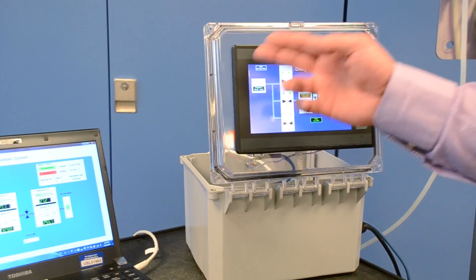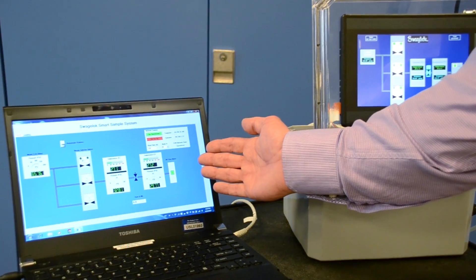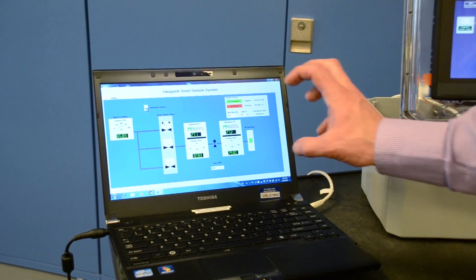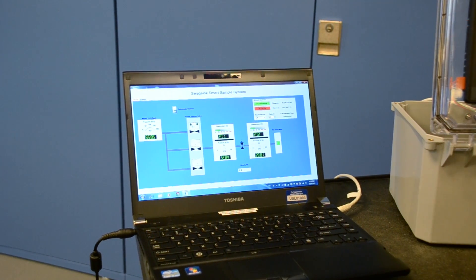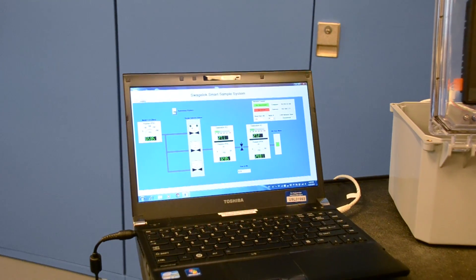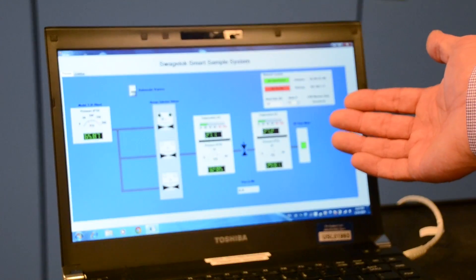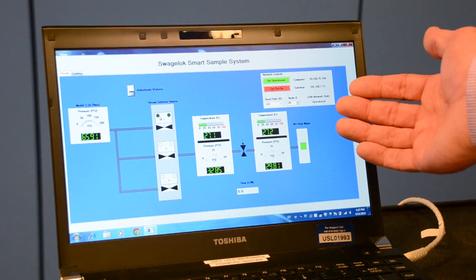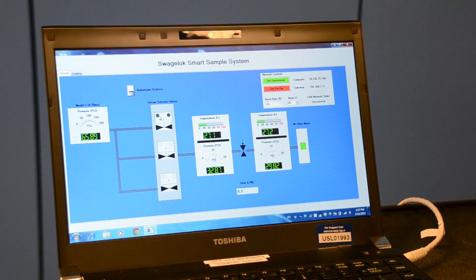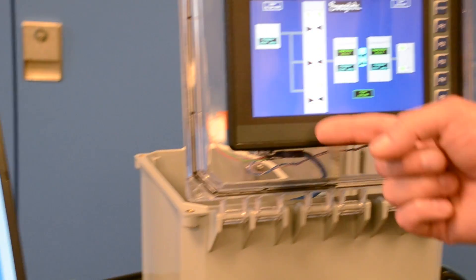Now, I indicated that this data is made available over Ethernet, and as you can see here, we have a laptop computer running a piece of software that allows the system to be controlled and monitored remotely. Swagelok provides software services, both to develop software for your end application, so you can sit at your desk and monitor your systems. We also provide services to customize the local display on the operator control station.